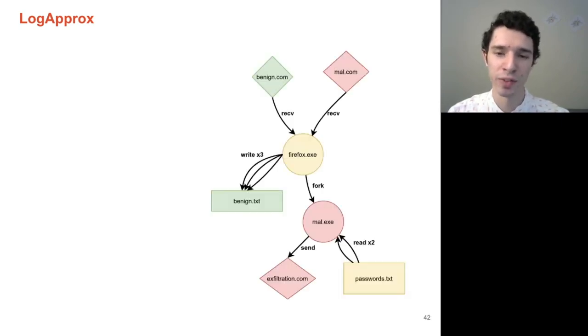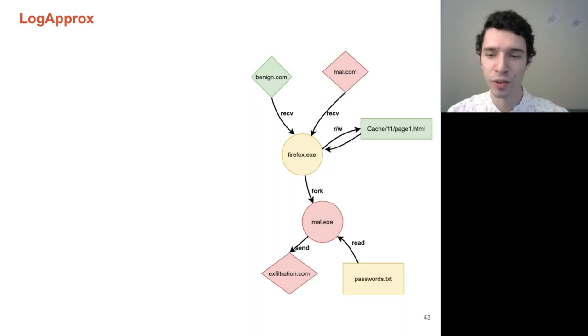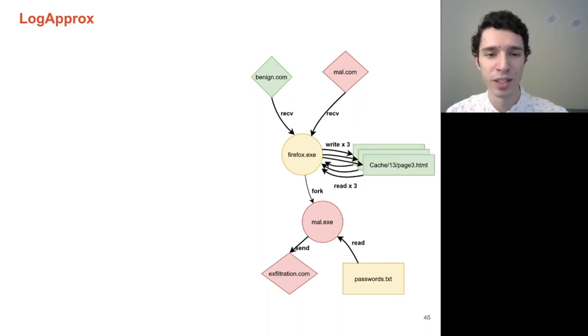Looking back at our Firefox example, we note that long-running processes do not typically read and write to a single file, but rather a series of files. For Firefox, this might be a list of cached pages that vary slightly in name and directory, but are ultimately semantically similar in nature. The same can be said for the libraries from which it loads, which have a similar purpose, but are named slightly differently.